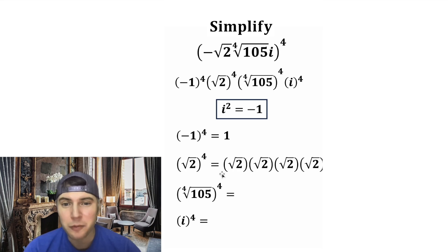And then square root of 2 to the fourth power is square root of 2 multiplied four times. So this square root of 2 times square root of 2 is equal to 2, and so is this one. And then 2 times 2 is equal to 4.